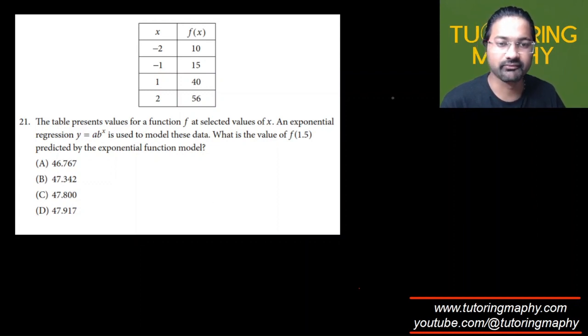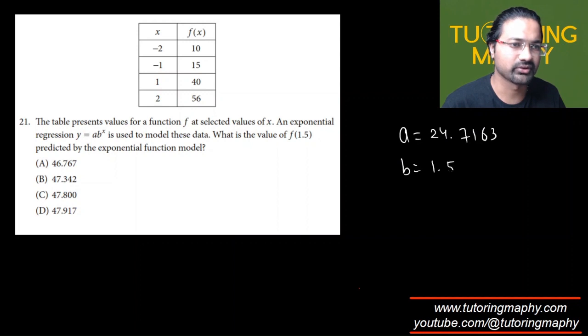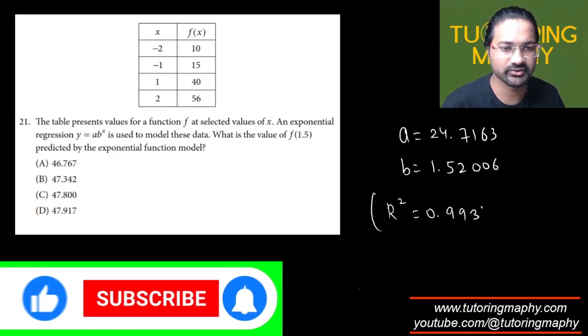I've done that already. When I did this, I got the value of a as 24.7163 and the value of b as 1.52006, with an r-squared value of 0.9934.